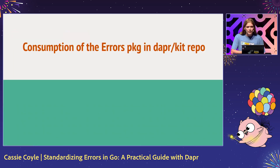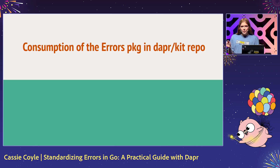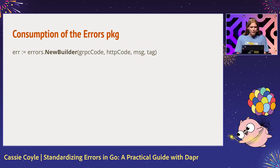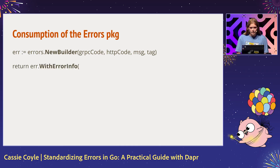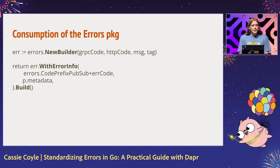Let's look at the consumption of our errors package in the DaprKit repository. It's a utility repo, all open source, and all in Go, so please take a look at it. The errors package is written using the builder pattern, making our error immutable by the caller. We start with errors.NewBuilder, taking in both the gRPC and HTTP error codes, message and tag. We enrich our error with that error info type — you could use any error type — and then we simply build the error. That's our errors package.